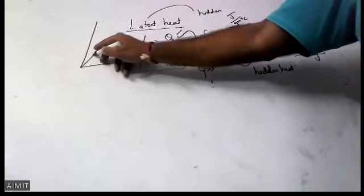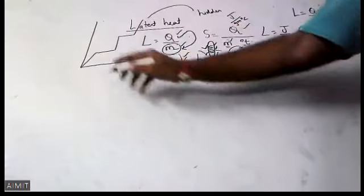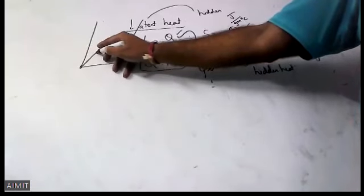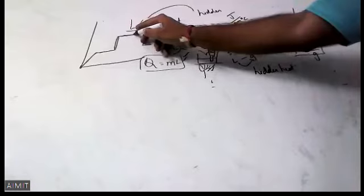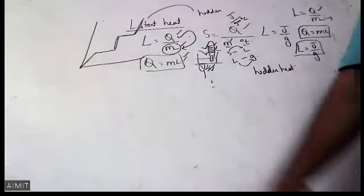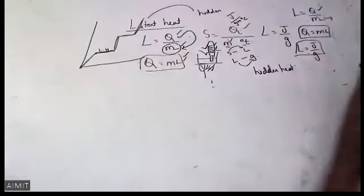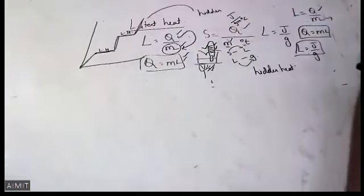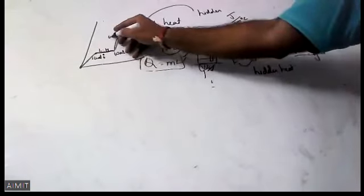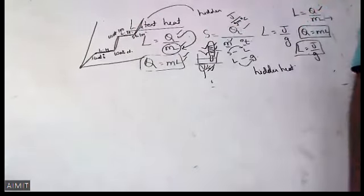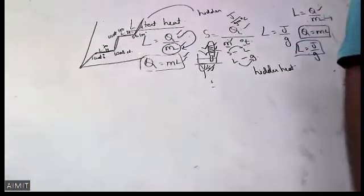Specific heat will be recorded in the thermometer, but Latent Heat will never be recorded in the thermometer. When you draw a graph for the conversion of solid to liquid, it has five regions: ice coming to water at 0, ice at 0 to water at 0, water at 0 to water at 100, water at 100 to steam at 100, and steam at 100 to steam beyond 100. The flat regions — ice at 0 to water at 0, and water at 100 to steam at 100 — are called Latent Heat because they are not recorded in the thermometer. All the heat supplied is used in breaking the bonds from solid to liquid and liquid to gas.